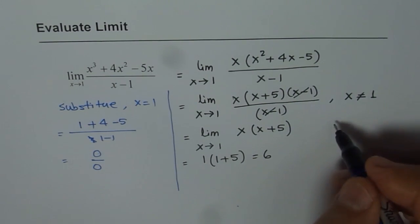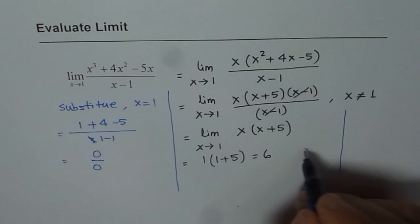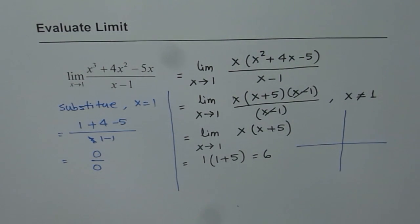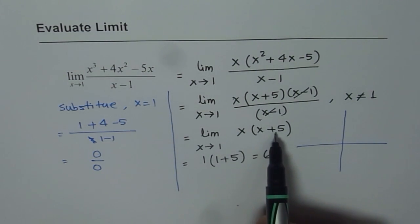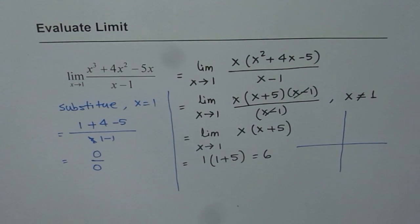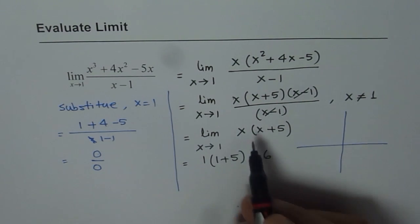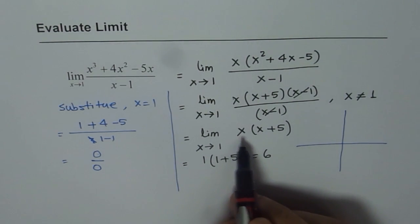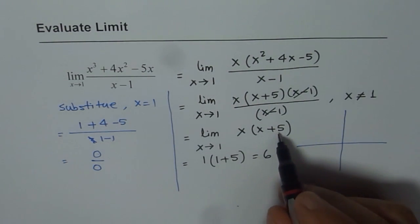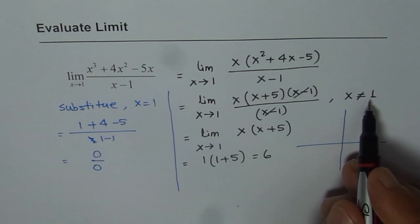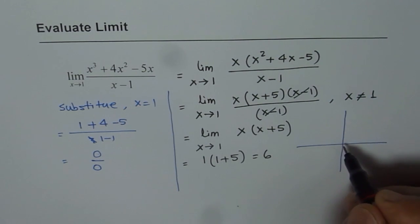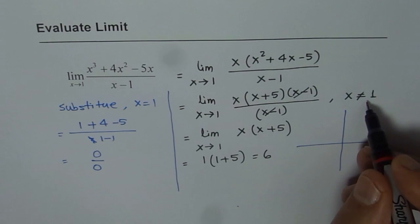When you sketch this function, this is what you should be expecting. So basically the function was x times x plus 5. That means it has two zeros. One is at x equals to 0, the other one is at x equals to minus 5 and it is not equal to 1. That means it has a hole at x equals to 1.